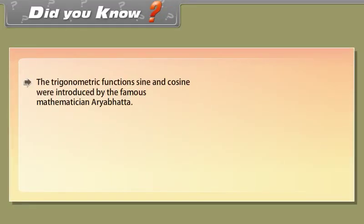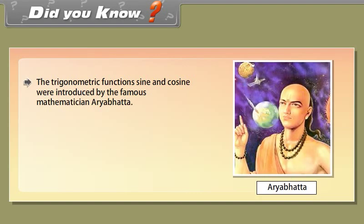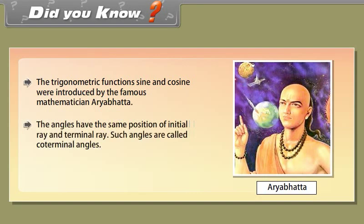Did you know? The trigonometric functions sine and cosine were introduced by the famous mathematician Aryabhata. Angles that have the same initial ray and terminal ray are called coterminal angles. Note that sin, cos, and tan are not multipliers.